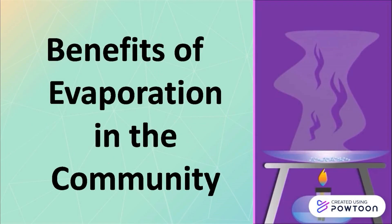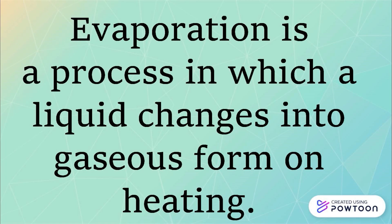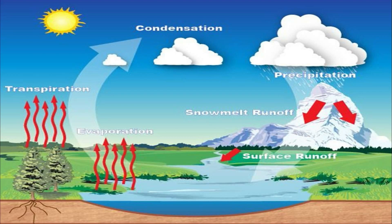Benefits of evaporation in the community. Evaporation is a process in which a liquid changes into gaseous form upon heating. The illustration shows the water cycle, also known as the hydrologic cycle, which describes the continuous movement of water on, above, and below the surface of the Earth. There are three main stages of the water cycle: evaporation, condensation, and precipitation.